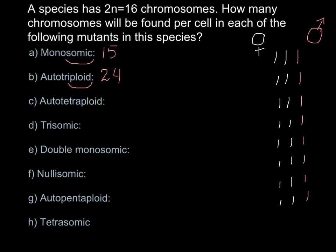Next, Question C: Autotetraploid means that we have tetra — four sets of chromosomes. For example, two sets of chromosomes from the father's side and two sets of chromosomes from the female side. So in this case we would have 16 plus 16 = 32 chromosomes in such an organism.